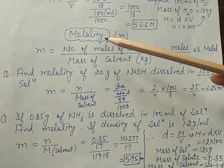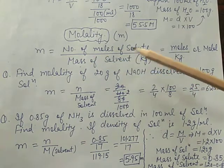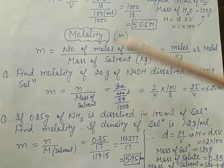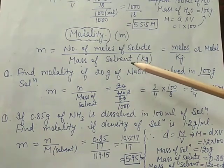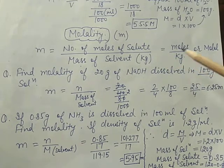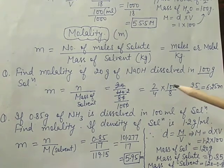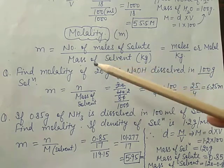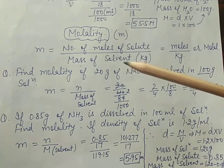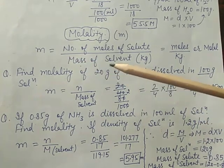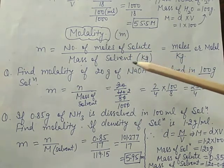Next topic is molality, denoted by small m. Molality equals the number of moles of solute present in 1 kg of the solvent. Note we use solvent, not solution. Its unit is moles per kg or molal. Molality is independent of temperature because it depends only on mass, not on volume of solution, so it does not change with temperature. Number of moles = given mass divided by molar mass.